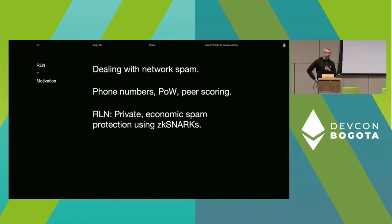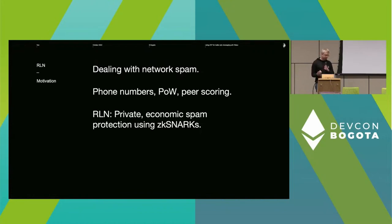Since the peer-to-peer relay network is open to anyone, there's a problem with spam. Looking at some existing solutions for dealing with spam in traditional messaging systems: entities like Google, Facebook, Twitter, Telegram, and Discord use phone number verification — while this is largely a Sybil-resistance mechanism, it's centralized and not private at all. Historically, Whisper used proof of work, which isn't really good for heterogeneous networks. Peer scoring is open to Sybil attacks and doesn't directly address spam protection in an anonymous P2P network.